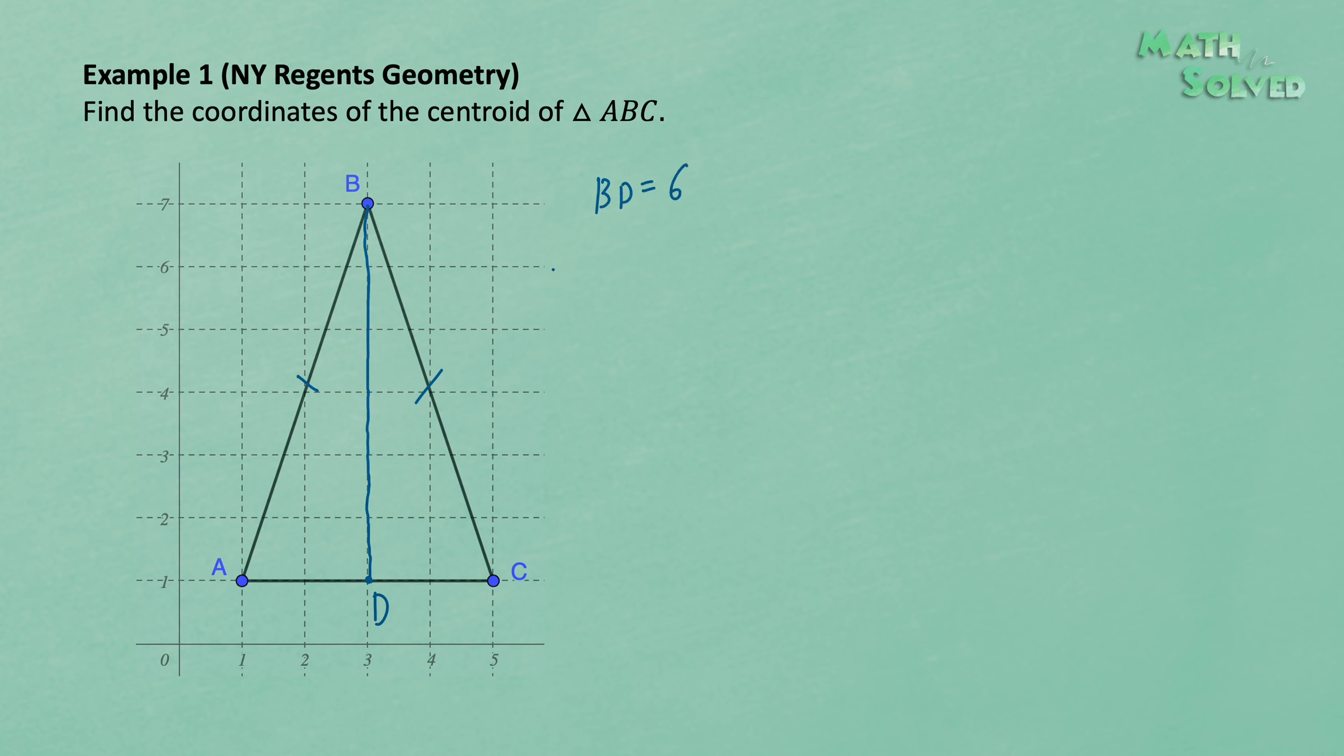Since the centroid is the intersection of the three medians of a triangle, the centroid must be on the median. So the centroid of triangle ABC must be on BD.